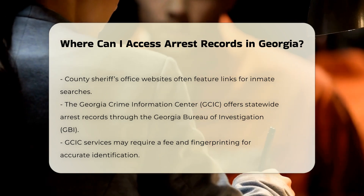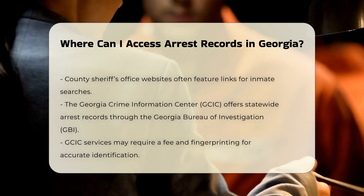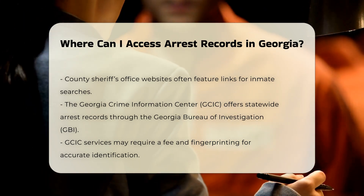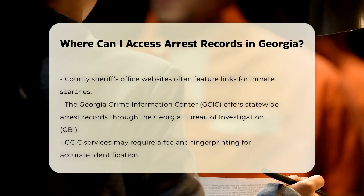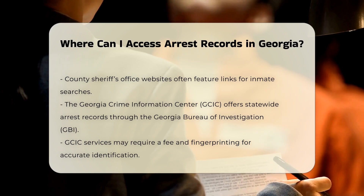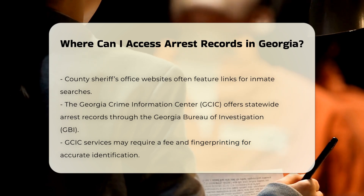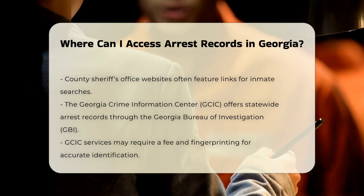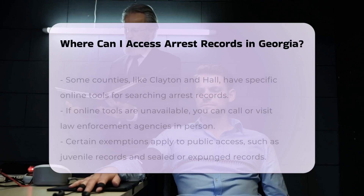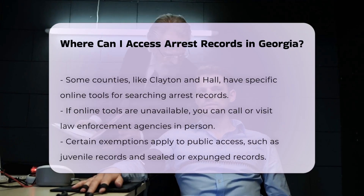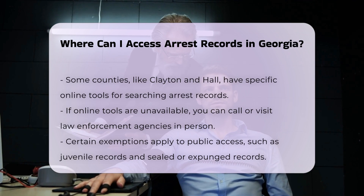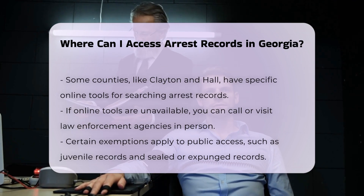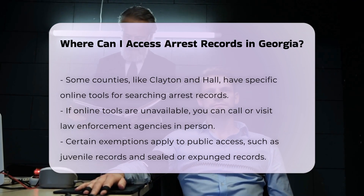For a more comprehensive search, you can use the services of the Georgia Crime Information Center through the Georgia Bureau of Investigation, GBI. GCIC provides statewide arrest records as part of a broader criminal record check, which may include arrest data, the agency that made the arrest, and the charges attached to the arrest. This service typically requires a fee and may involve fingerprinting for accurate identification.